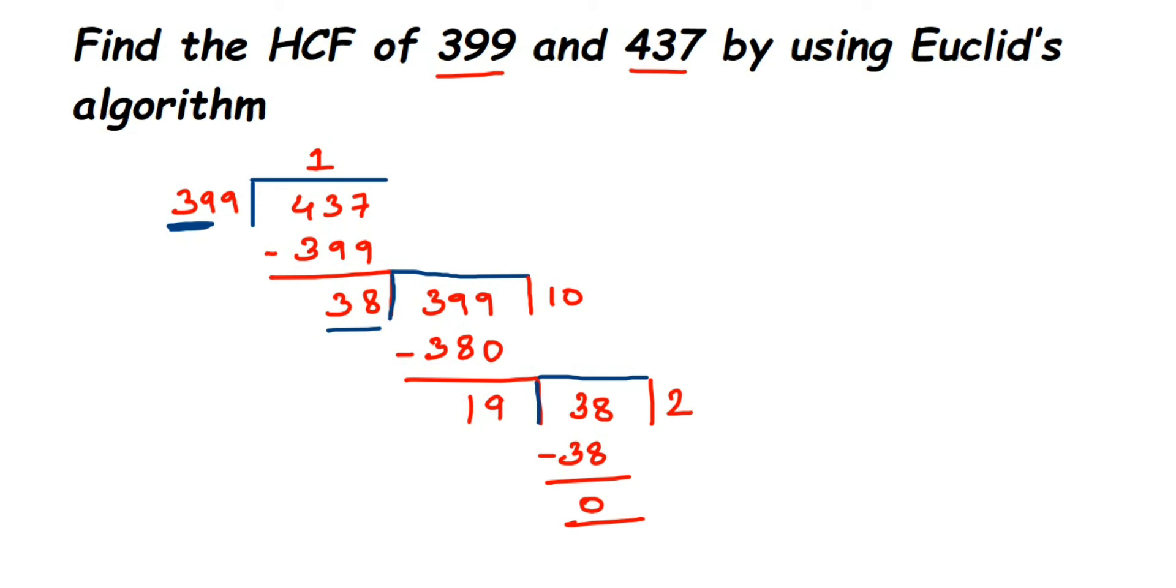Now subtract it. We'll get 0 as a remainder. So once you got 0 as a remainder, that's it. We can stop the process. The HCF will be 19. So the last step, whatever was a divisor, that will be the HCF of the given two numbers. Therefore, HCF of 399 and 437 is equal to 19.